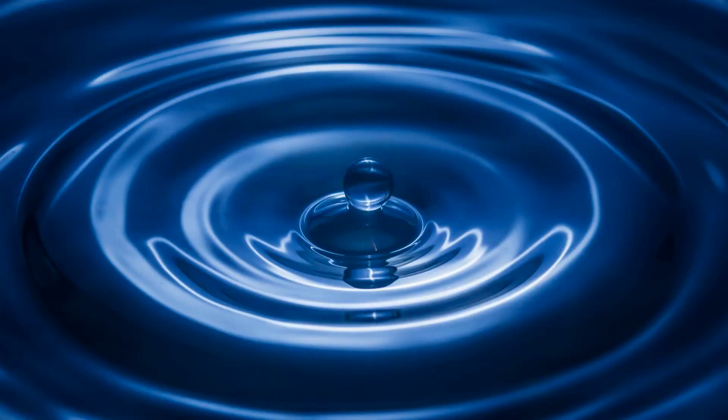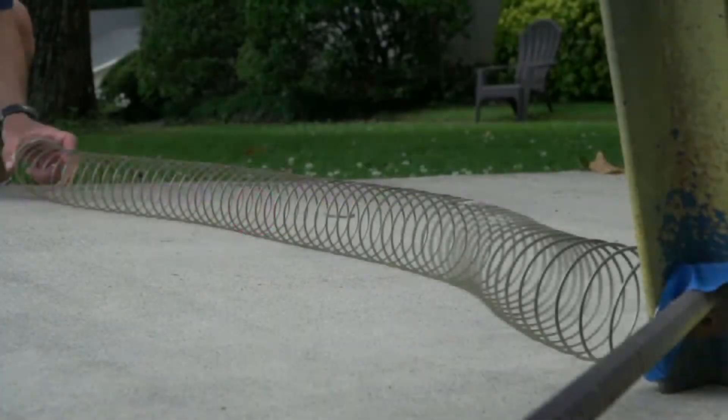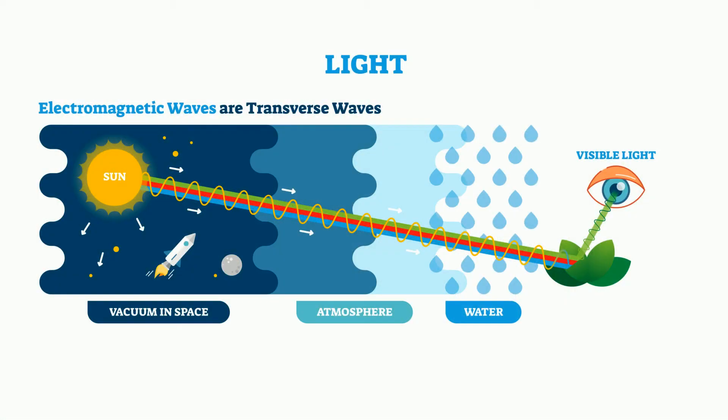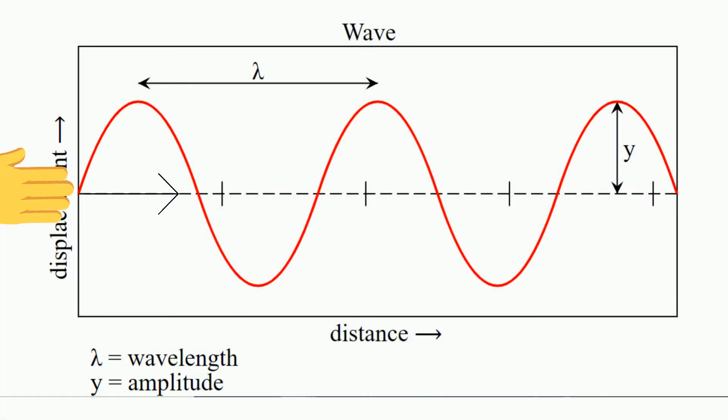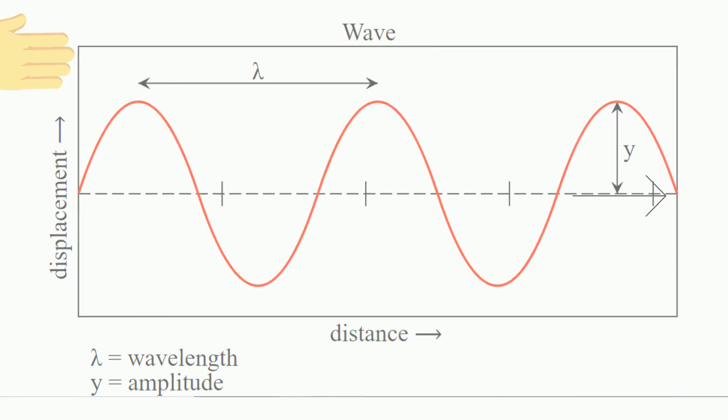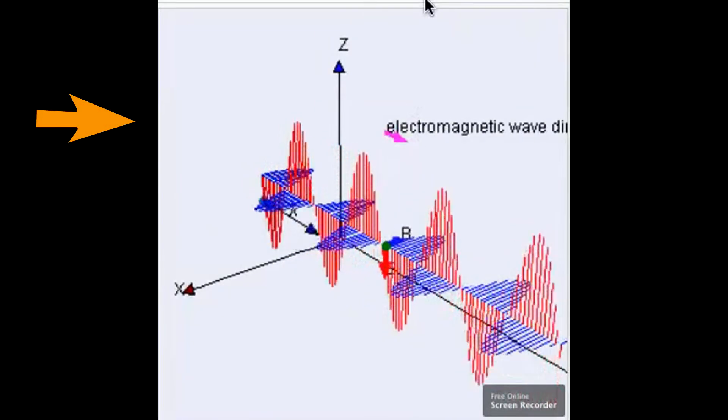What do all these waves have in common? They are all transverse waves. A transverse wave is a wave in which the oscillations are at a right angle to the wave movement.